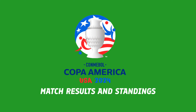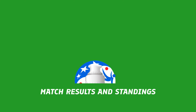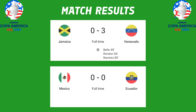Following are the match results and standings table for Copa America 2024. Match results today, Sunday the 30th of June 2024: Jamaica lost by three versus Venezuela, Mexico drew 0-0 versus Ecuador.